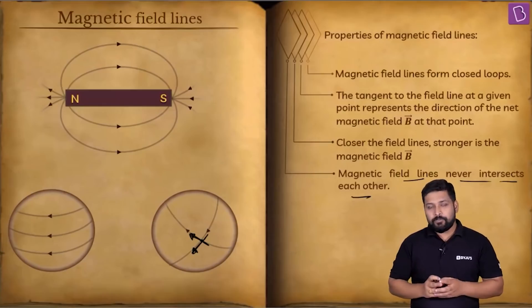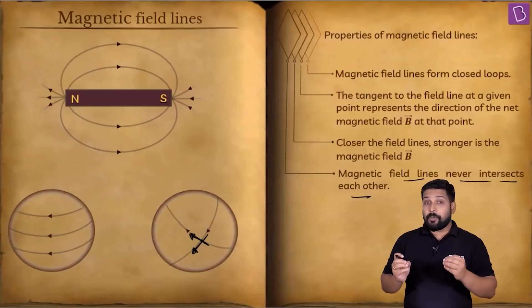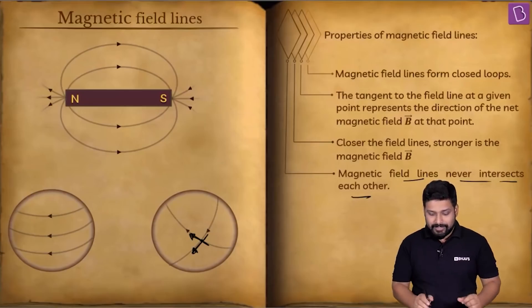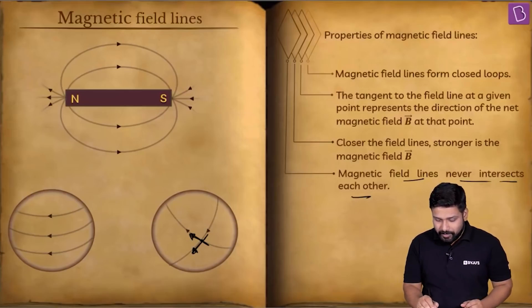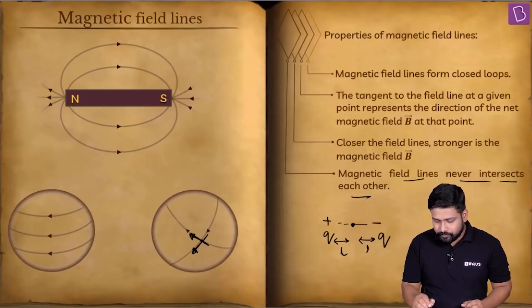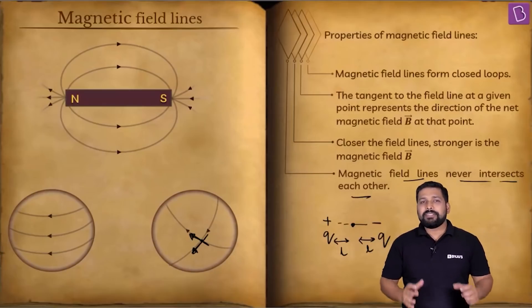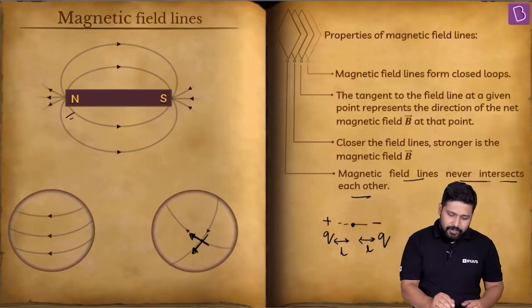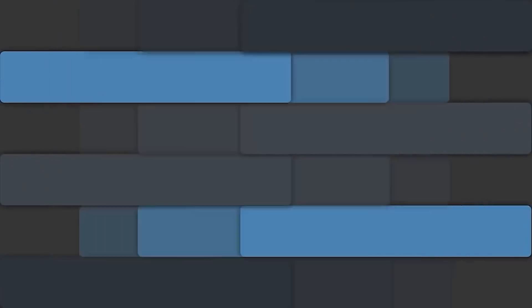Just like we had the concept of an electric dipole — two equal and opposite charges separated by a small distance, with +q and −q equidistant from the center — something similar will also happen in the case of magnets.